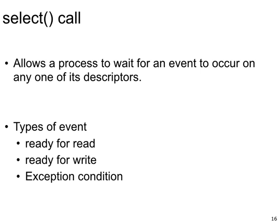The select system call allows a process to wait for events to occur on any one of its descriptors. There are three types of events: read, write, and exception conditions. If you want to read data from a particular IO device, that would be a read IO operation. If you want to check whether a device is ready to accept write operations, that would be a write event. And if you want to monitor error conditions on an IO device, that would be an exception condition.